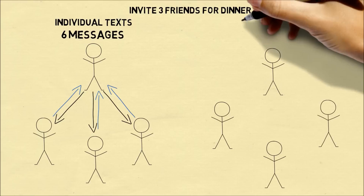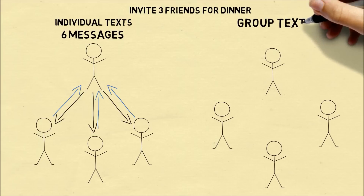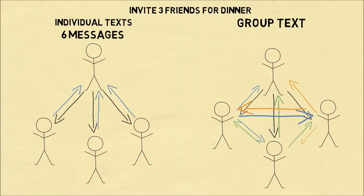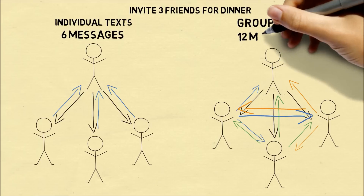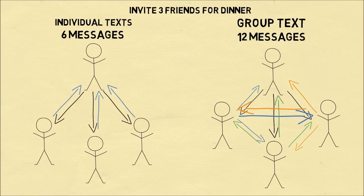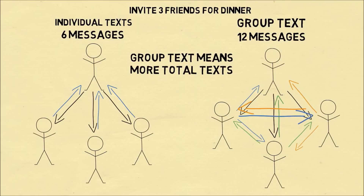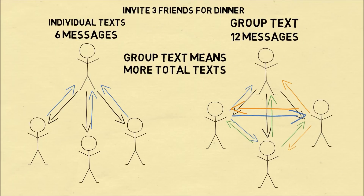An alternate way you could organize the dinner is by sending a group text. In this case your message would go to each person in the group, and then each person would reply to each person in the group. So since everyone is sending a message to each person, that's 12 messages. This is why group texts are annoying — they result in more texts to communicate the same information.